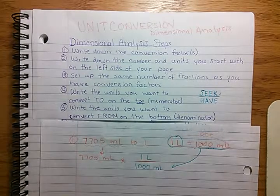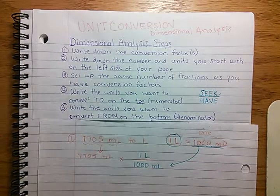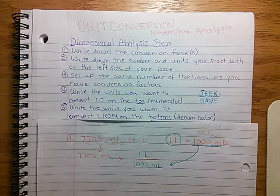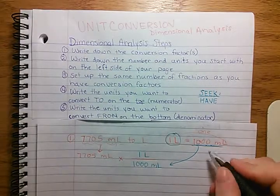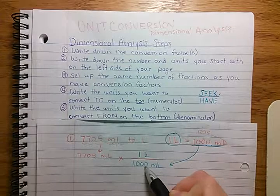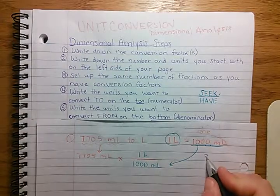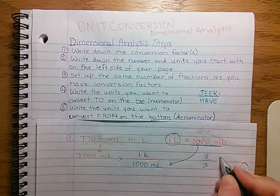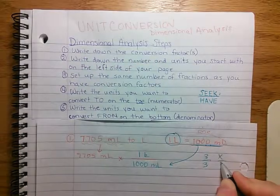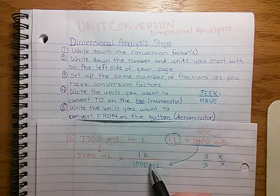The reason we're able to do this is because basically we're multiplying by 1. This fraction is the same as 1 — just like 3 over 3 is equal to 1, and x over x is equal to 1. This is the same thing.